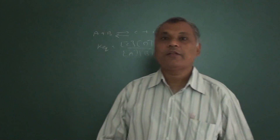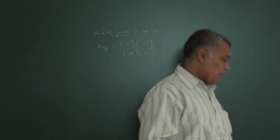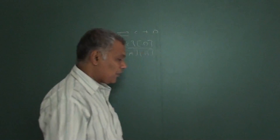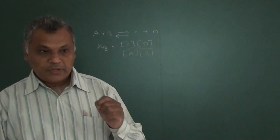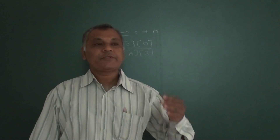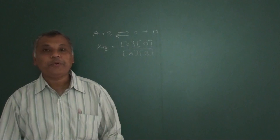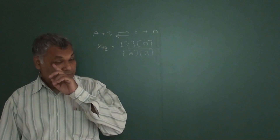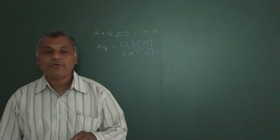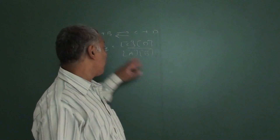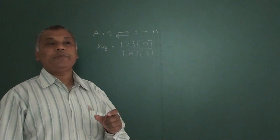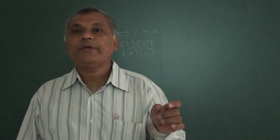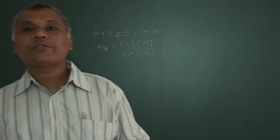How to predict whether the equilibrium is reached? By the value of K, we can predict whether the reaction has attained equilibrium, whether it is still moving towards equilibrium, or whether it has crossed the equilibrium.